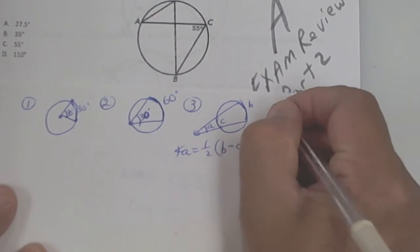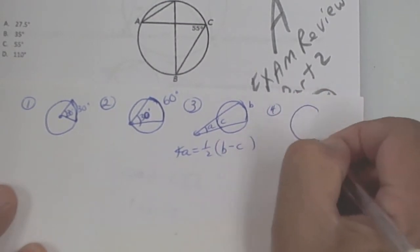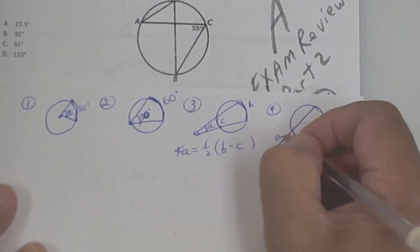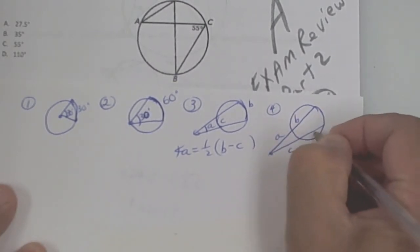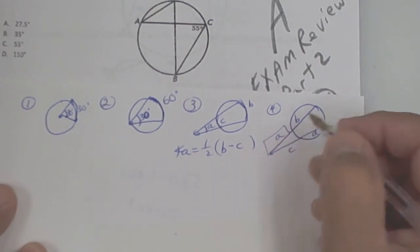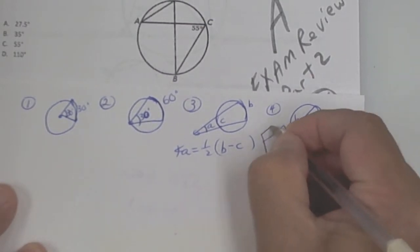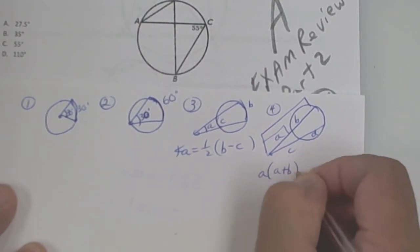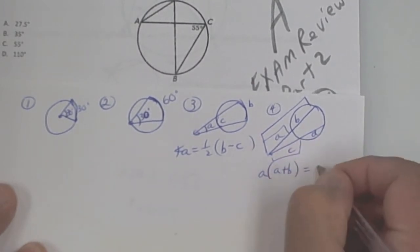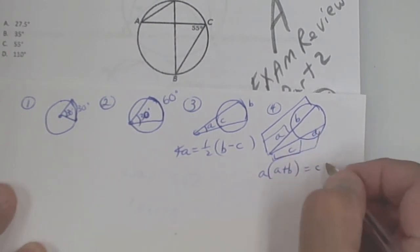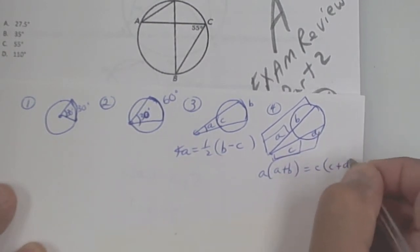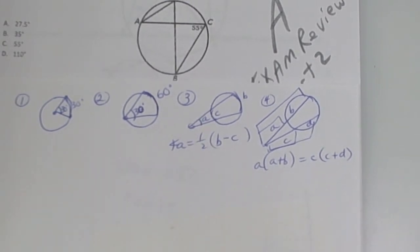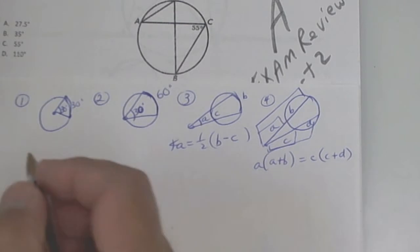There's another one that goes along with number three — it's a little out of order from what I originally taught you. For this piece A-B-C-D, the outside piece A times the whole thing (A plus B) is equal to the outside piece C times the whole thing (C plus D). These two formulas go together because the vertex is on the outside.